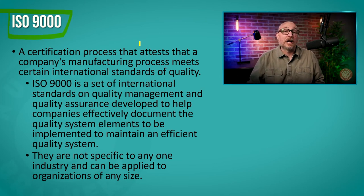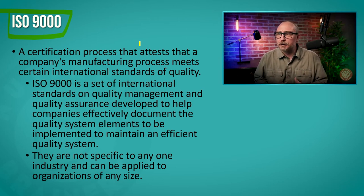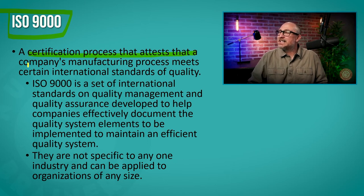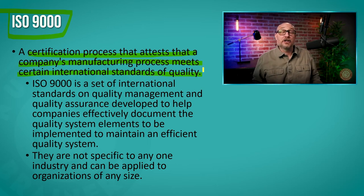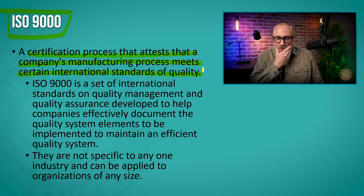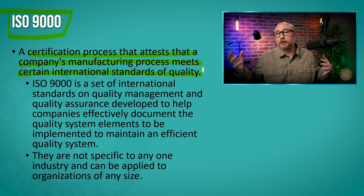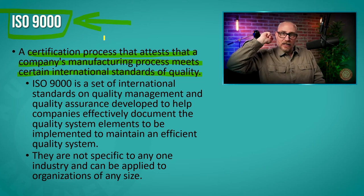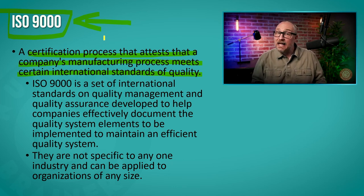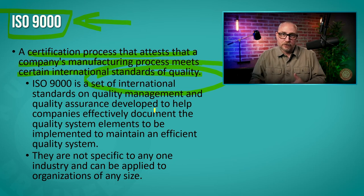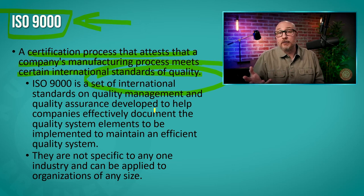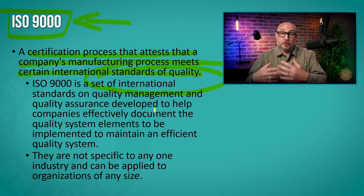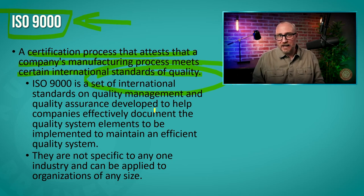That's where the idea of ISO 9000 comes from. ISO 9000 is a certification process that attests that a company's manufacturing meets certain international standards of quality. So if I am a manufacturer and I want to attract customers from all around the world, I really want ISO 9000 certification because I can show potential clients that certification and say my manufacturing process meets the highest standards of quality when it comes to reliability and cost. So if you are looking for a manufacturing or production partner, you don't have to dig deep to audit their processes — you just look for their certifications.